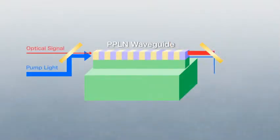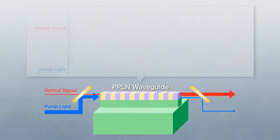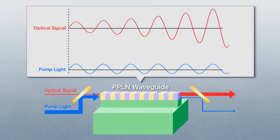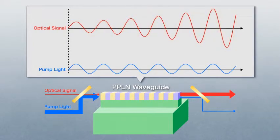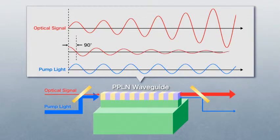Inside this module, an optical signal and pump light propagate together through a PPLN waveguide. If the pump and the signal are in in-phase condition, the optical signal is amplified. On the other hand, if they are quadrature phase condition, the optical signal is attenuated. This is the mechanism of phase-sensitive optical amplification.